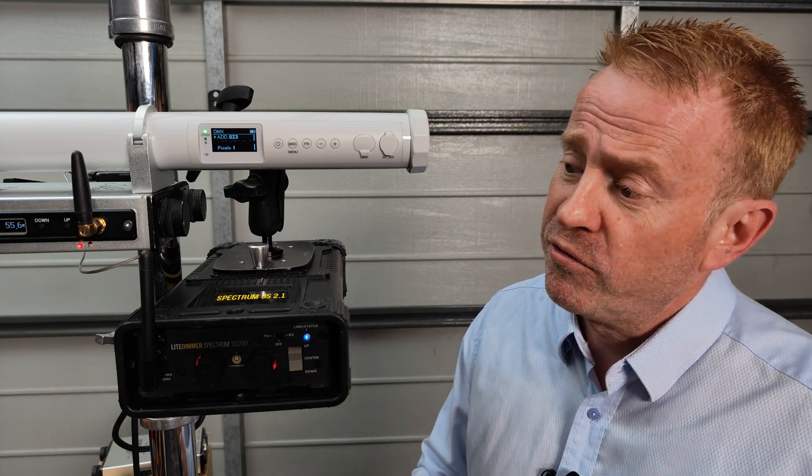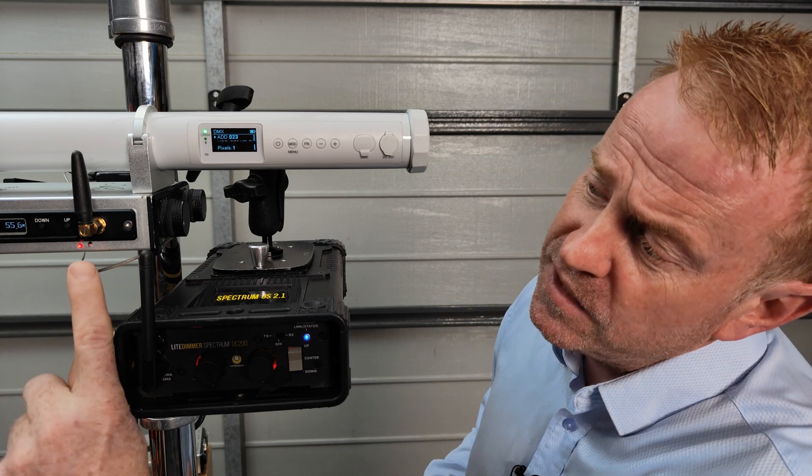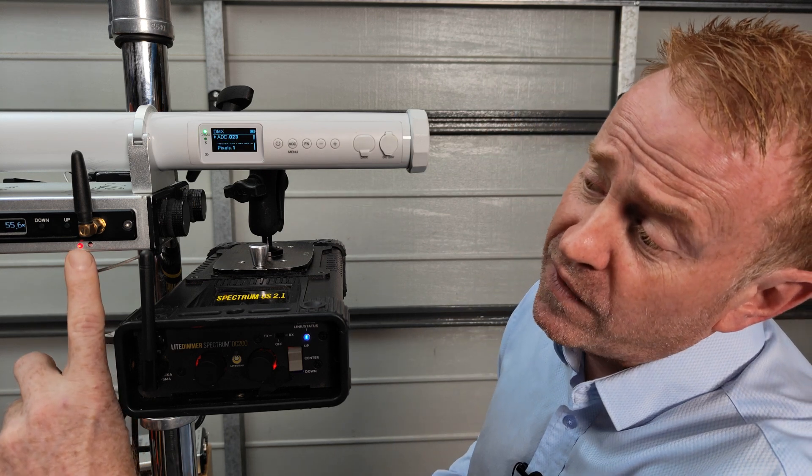All right, so I've got three controllers here or three lights that have built-in CRMX. All three of these have status lights. Now, not every light that you buy that has built-in CRMX will have a status light. It's about 50-50. In fact, this controller here, the status light is an aftermarket modification. It wasn't actually sold with a status light, but I got the status light put on because I got sick to death of trying to figure out what was going wrong, what mistakes I was making.